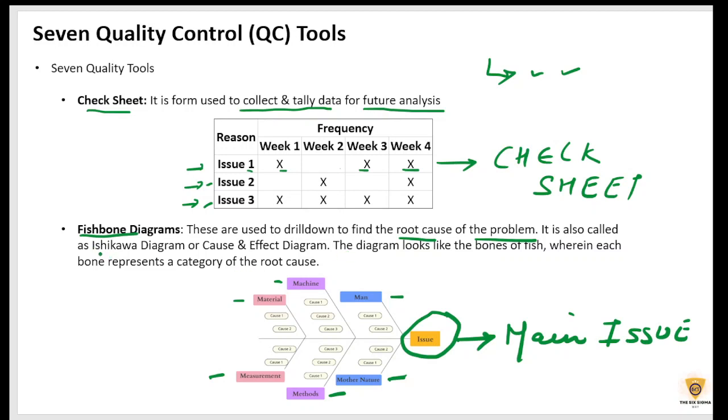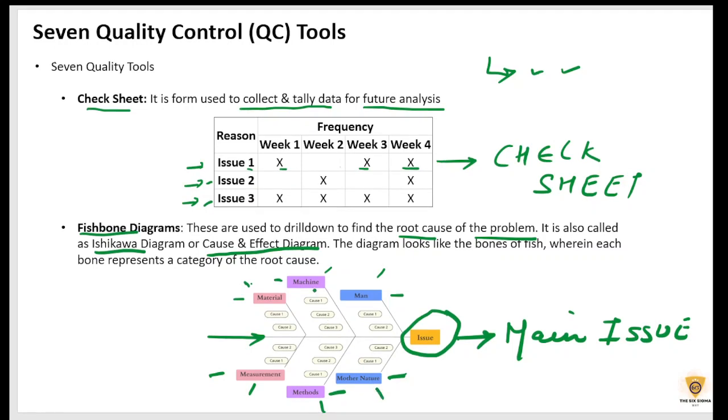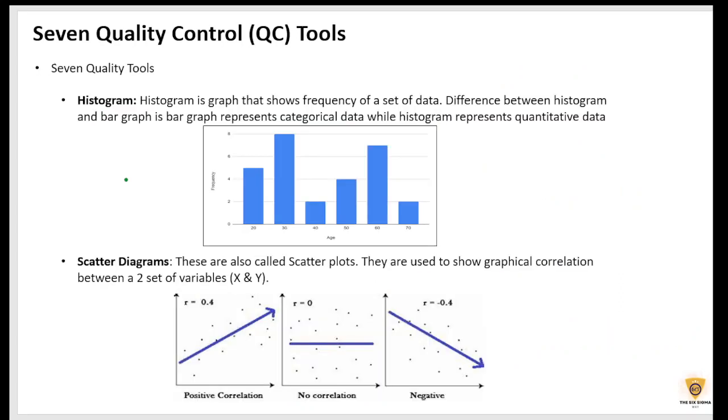Now, this is also called an Ishikawa diagram or a cause and effect diagram. So this is called a fishbone diagram. If you check, this is how a fish is written. We can see that this is the main bone of the fish with the different bones which are coming from here. They describe the different problems that we have. We have categorized it into different categories, right? So now let's move to the next one.